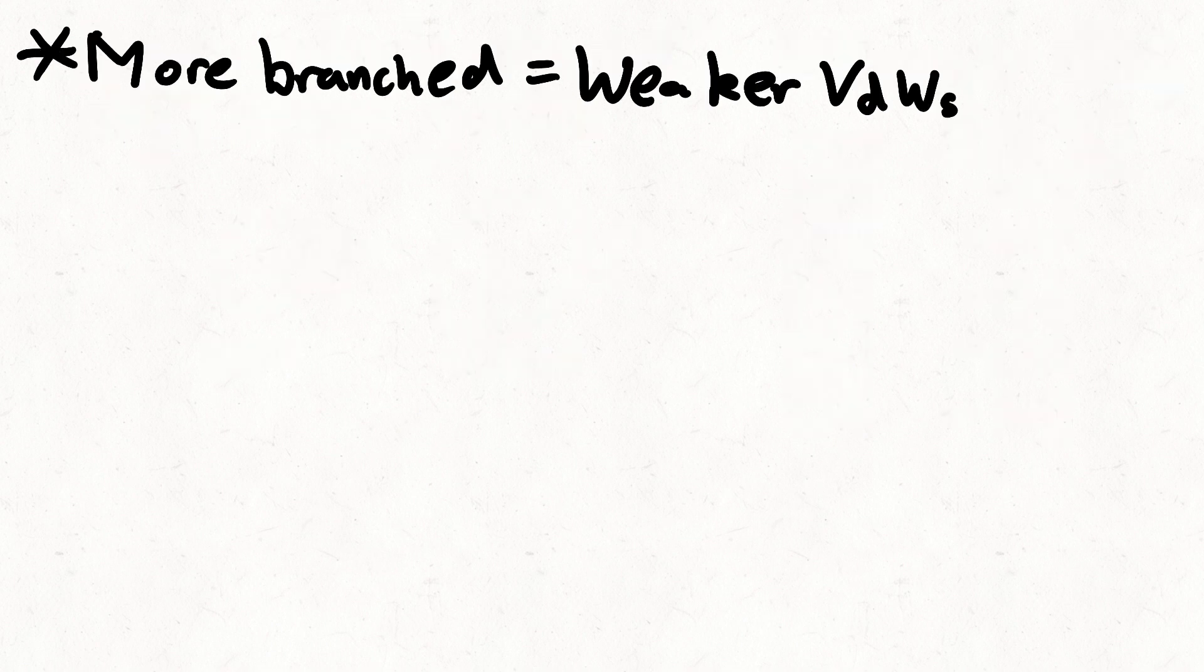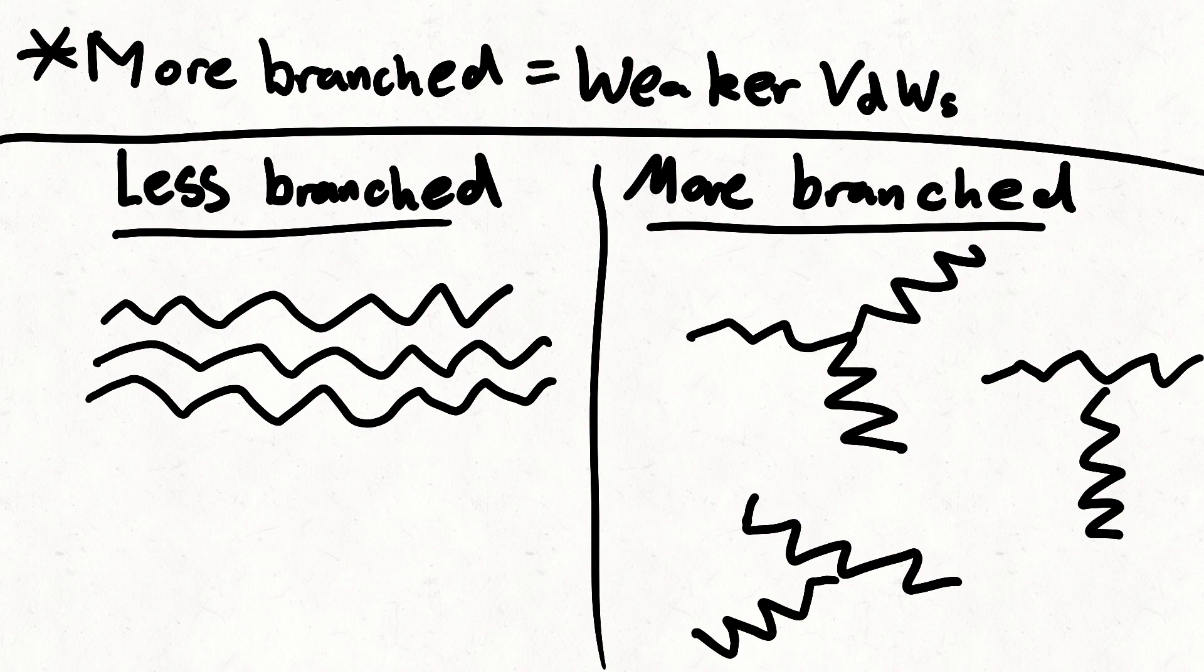Also, the more branched the molecule is, the weaker the van der Waals forces are, as straighter chains can lie closer together than more branched chains.